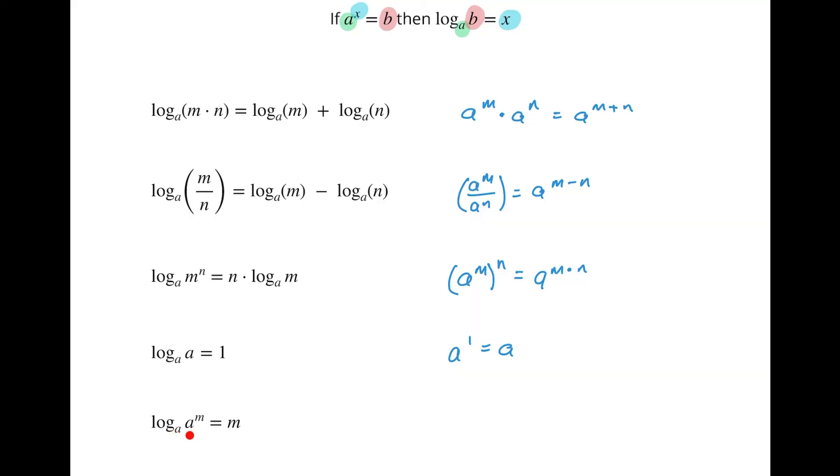a to the log base a of a to the m power—that equals just m. Well, that's just building these two things here, right? So if we were to write in an intermediate step, that's going to be times—using this rule up here, we've got a number to a power, so we bring the power out to the front. So here the m is coming out to the front. What we would have is m times log base a of a. Well, we just saw that this thing is equal to one, so that's why this simplifies down to being just m.